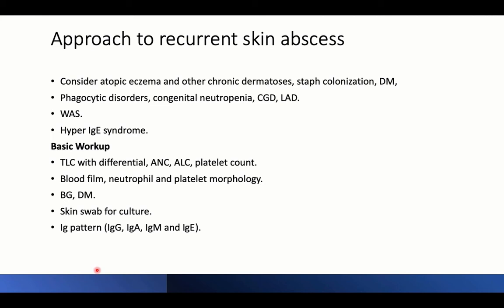For a child with recurrent skin abscesses, first consider atopic eczema, chronic dermatoses, diabetes mellitus, chronic hyperglycemia, or staph colonization. If none of these apply, consider phagocyte disorders including congenital neutropenia, LAD, and chronic granulomatous disease. Recurrent skin abscess is also associated with Wiskott-Aldrich syndrome and hyper-IgE syndrome, which characteristically has very high IgE and eosinophil levels plus skin rashes and pulmonary infections.